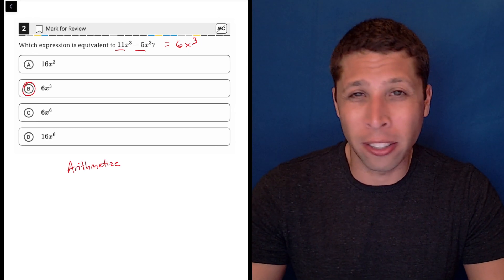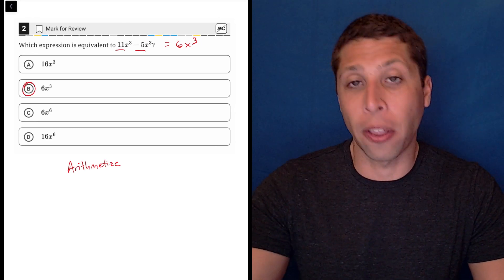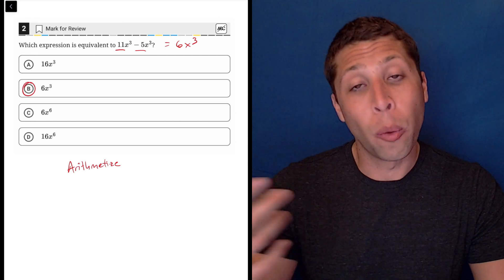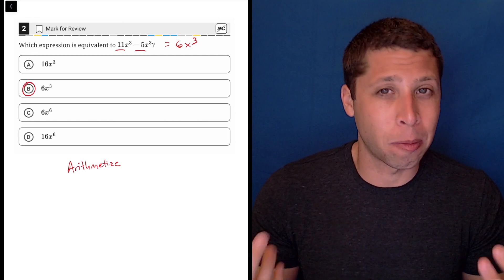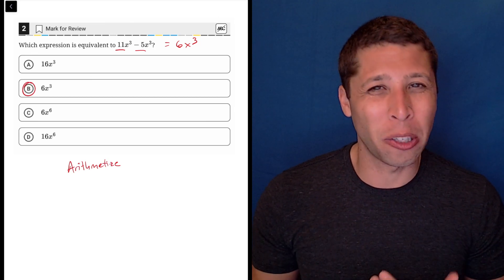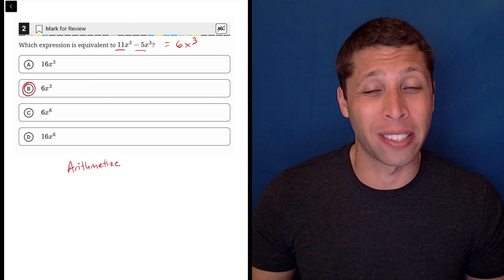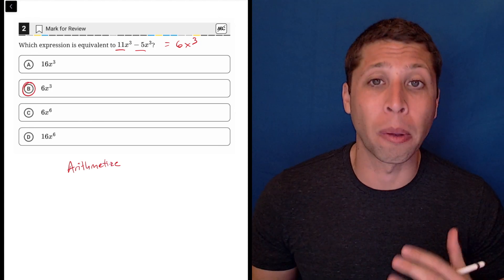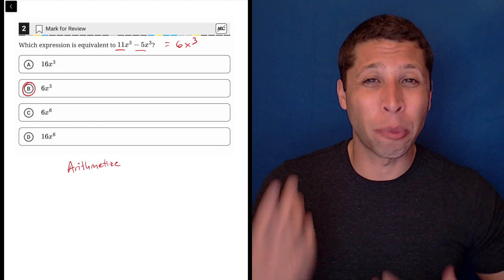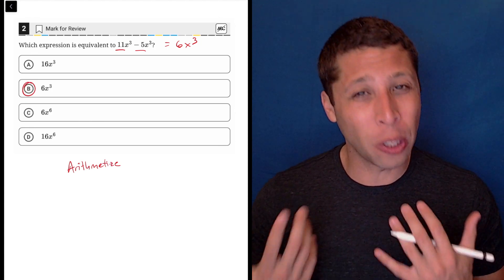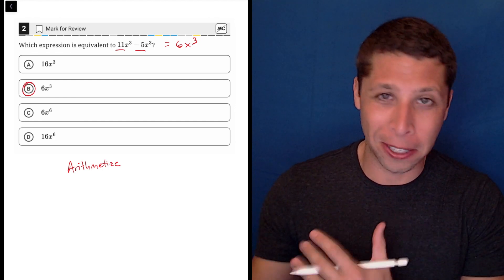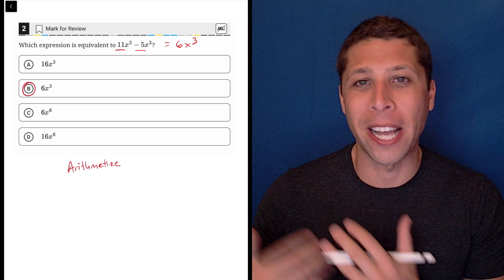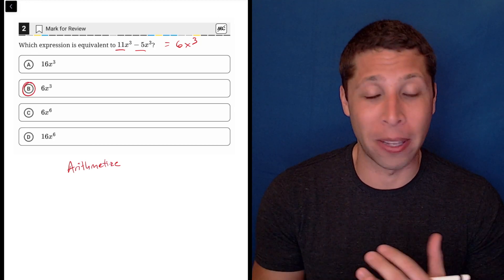And even if we did try to do it, we'd have this problem of x to the third versus x to the sixth. So we need to pick a number like 2 that actually is going to change when we apply an exponent to it. So that's not really something you want to do when you have big exponents. It kind of causes problems. So this is actually a common problem with the arithmetized strategy. When we start to see big exponents, it doesn't really work very well. But hopefully you just know the properties of variables with exponents and how to combine them and when not to combine them.